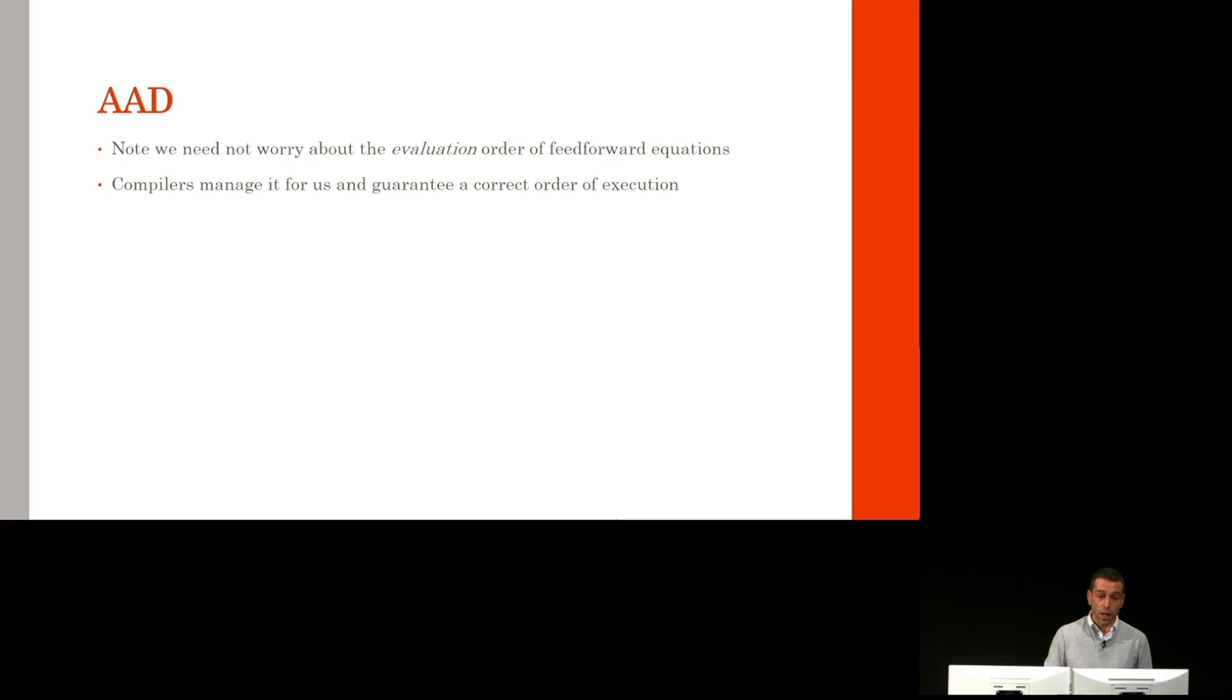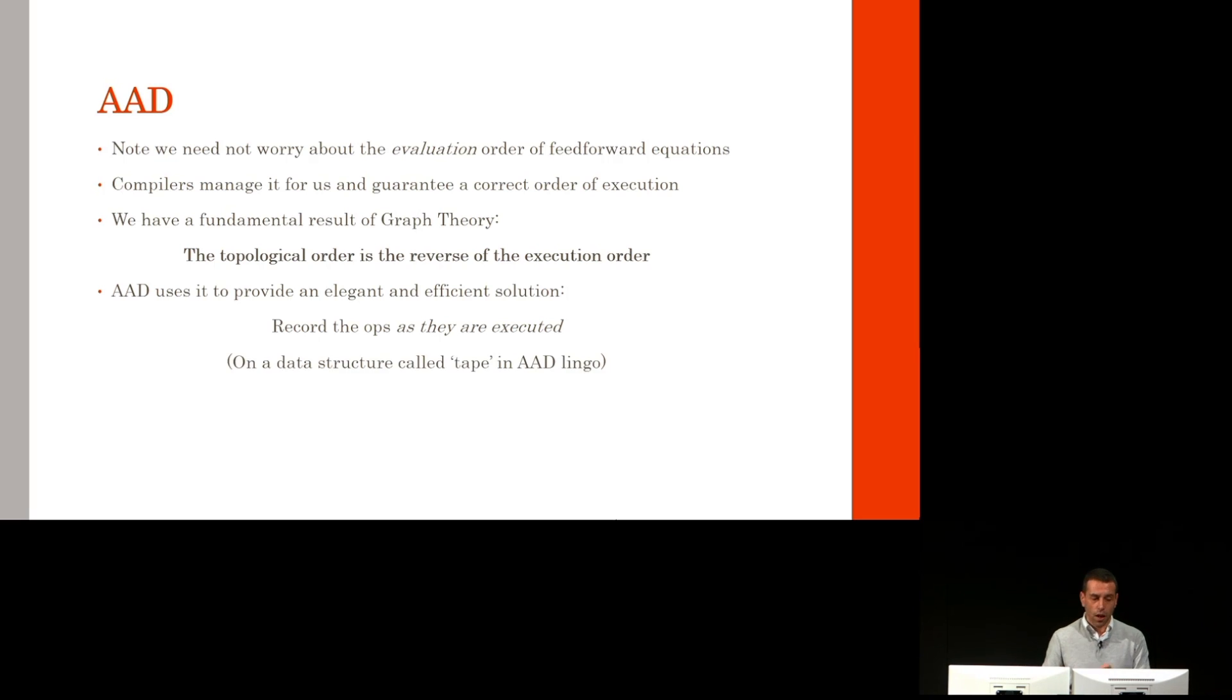We could run a topological sort and backprop the sorted graph. But this is very inefficient because topological sorts are expensive. This is where AAD comes into play. Notice we never worry about the evaluation order of the feedforward equations. The compilers take care of this and guarantee a correct order of execution. We have a fundamental result in graph theory: the topological order is the exact reverse of the execution order. Leveraging this result, AAD gives us an elegant and efficient solution. We record the ops as they are executed. When we execute them, we record them on a data structure that we call tape in AAD lingo. So we always get a flattened graph as a sequence in the execution order, and we can directly backpropagate the adjoint equations right to left.